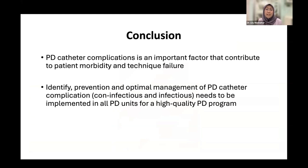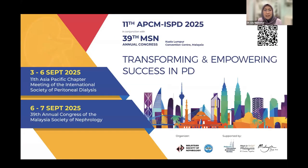In conclusion, PD catheter complications are an important factor contributing to patient morbidity and technique failure. As you can see, there are many PD catheter complications — either immediate or late, defined as less than or more than 30 days. Troubleshooting by identifying, preventing, and optimally managing PD catheter complications is crucial to ensure good PD catheter survival and better outcomes in your PD center. I also want to highlight that in 2025, Malaysia will be hosting the 11th Asia Pacific chapter of the ISPD Congress in Kuala Lumpur from 3rd to 6th September. I welcome all of you to join us.